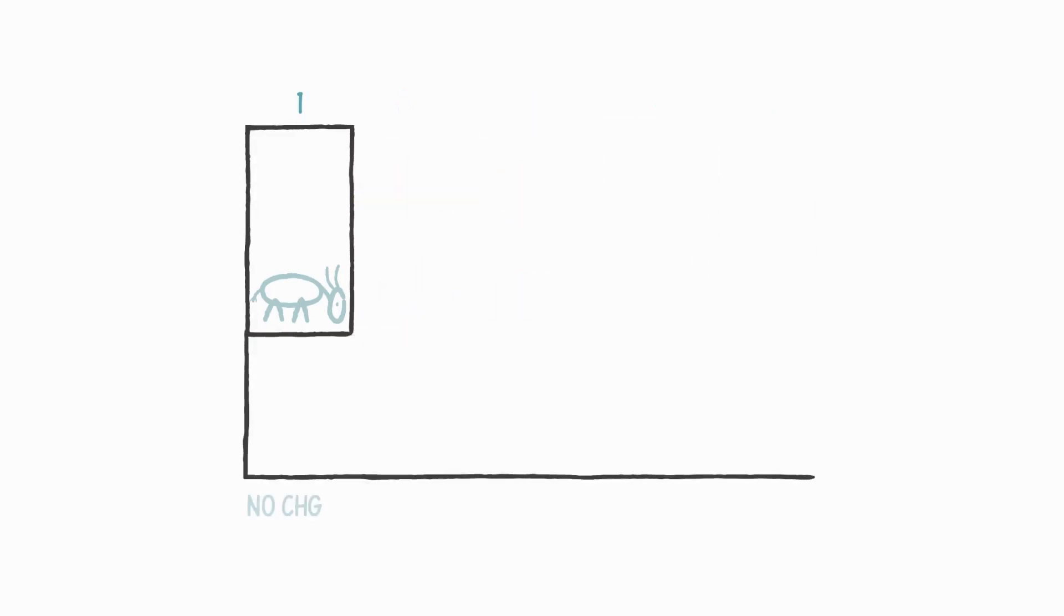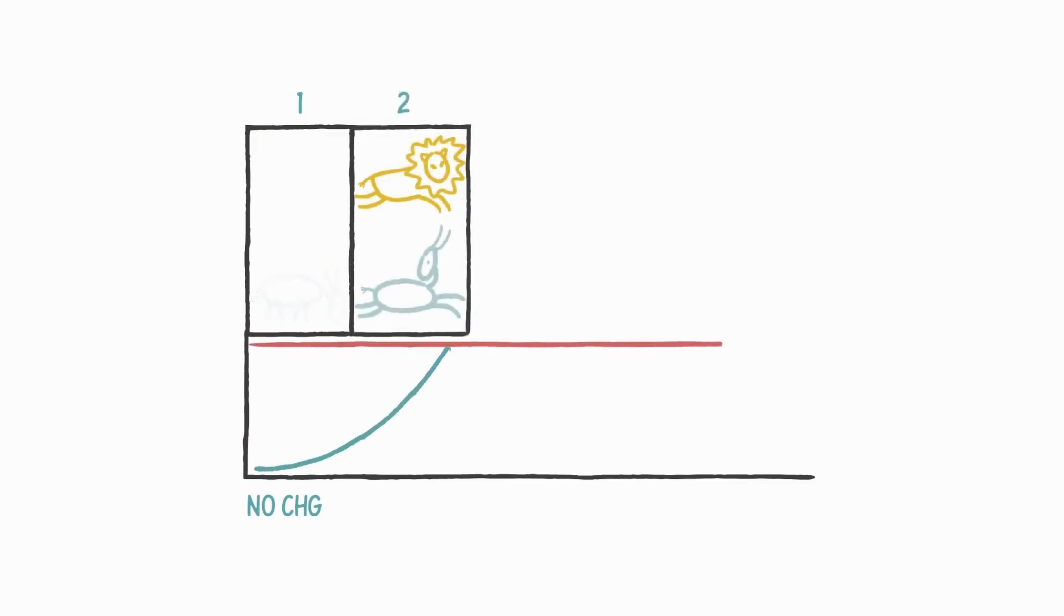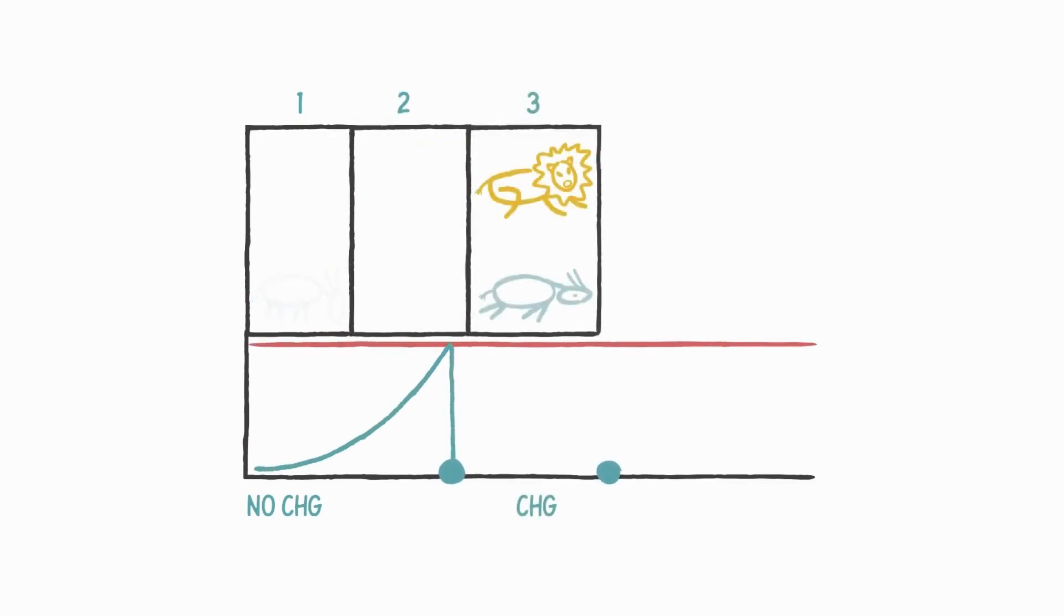In box one, it's calm and safe. In the next, it's running from a threat. In box three, it feels overwhelmed as it's about to be eaten. And in box four, it's running again. But this time, in that box, there is no actual threat present.